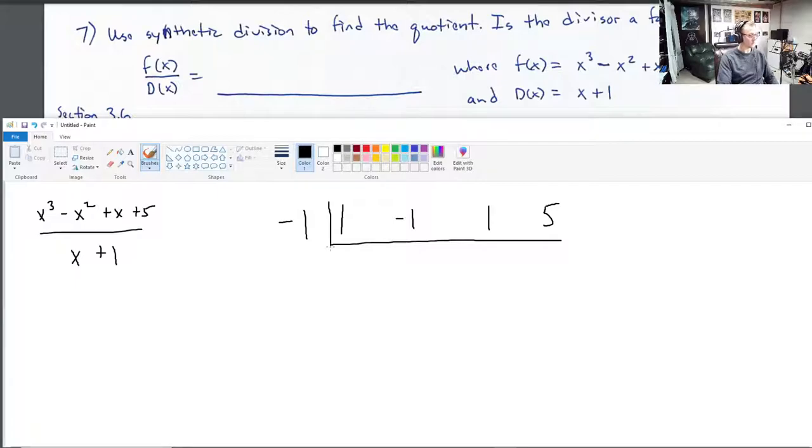And then, we proceed with this synthetic process, this synthetic division process. The first step is the easiest step. We just take the first coefficient, and we drop it down. The next thing we do is we take negative 1, and we multiply it by that 1. And the result, we put right here. So, we've got negative 1 times 1, which is negative 1. Then, we just add. We just add this column, so we get negative 2. Then, we multiply negative 1 times negative 2 to give us 2. Then, we add this column to get 3. Then, we multiply negative 1 by 3 to get negative 3. And we add this column to get 2. And we're done. It's that fast.